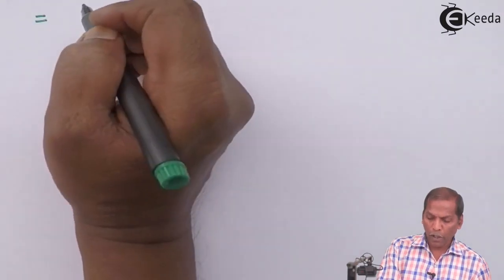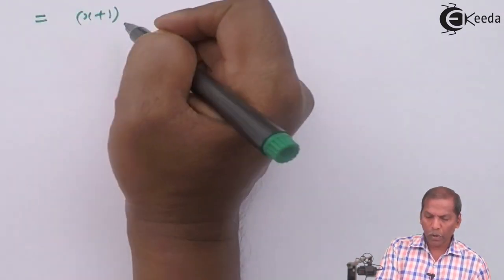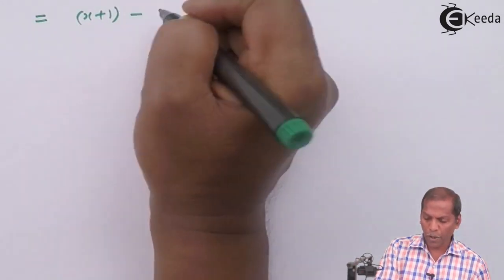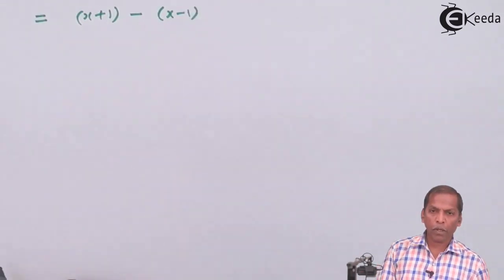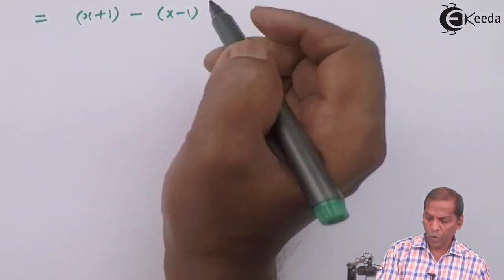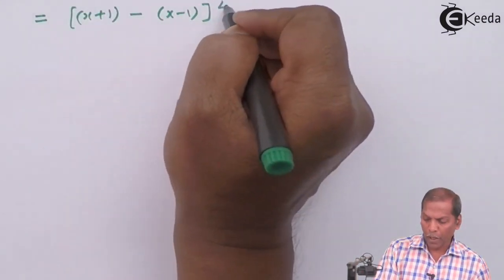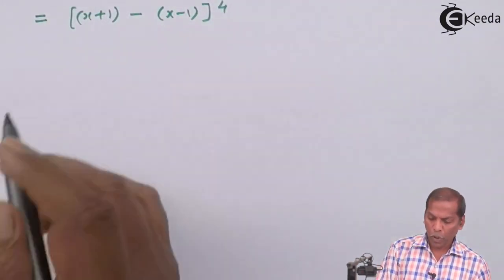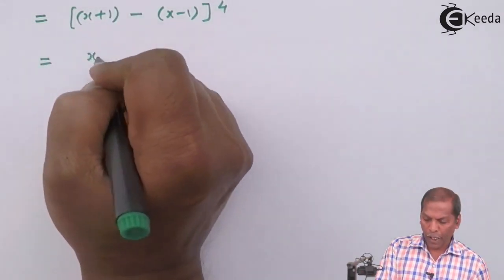This is equal to (x+1) minus (x-1), whole bracket raised to the 4th power. On simplifying further, here we get x+1.